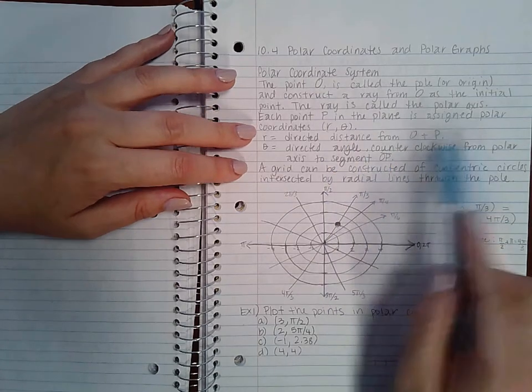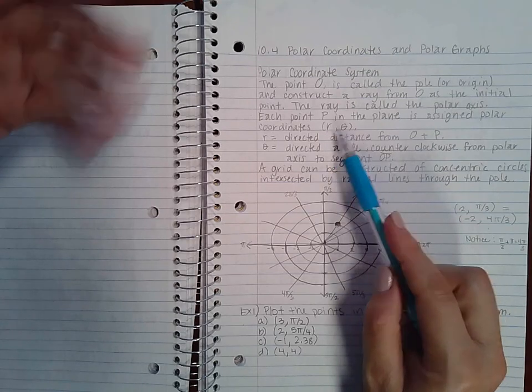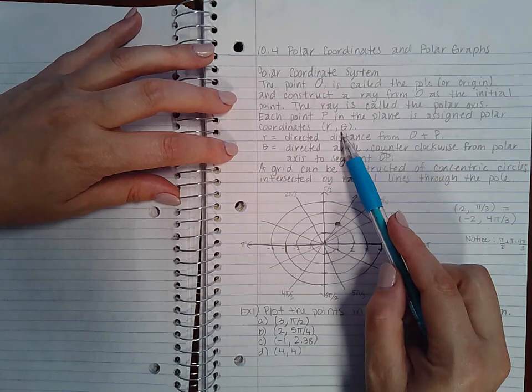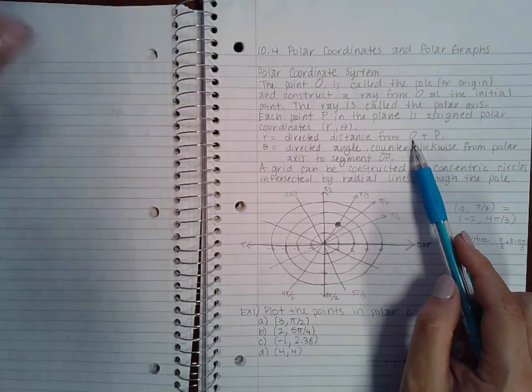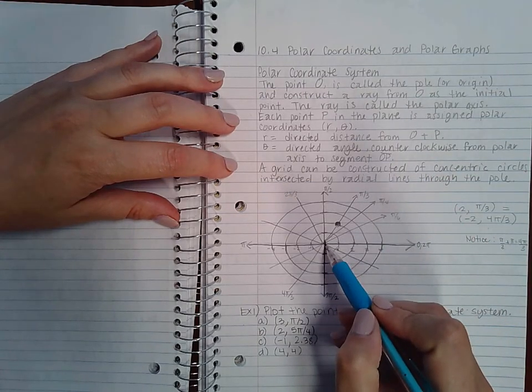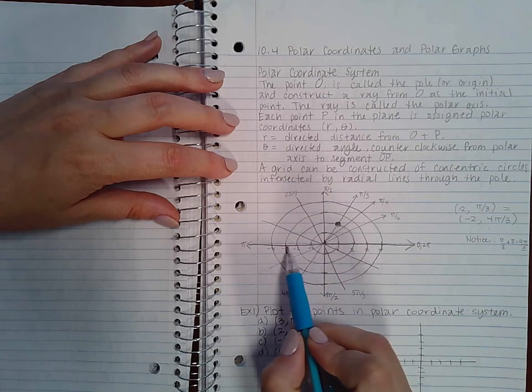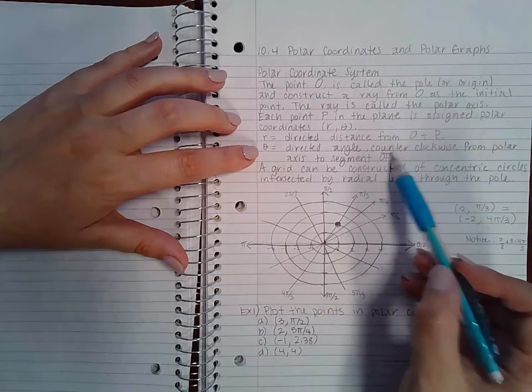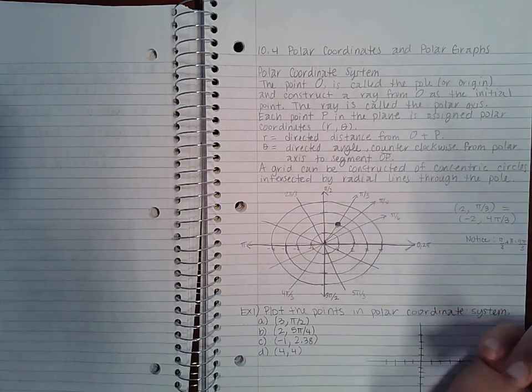Now each point in the plane is assigned polar coordinates. Much like in rectangular coordinates you have x and y, well here we have r and theta. R being the radius, theta being an angle. R is the directed distance from the pole, the origin, and the point. So if your radius is positive, you move out to the right in the positive direction, and if your radius is negative, you move backward toward the negative direction. And then your theta, if it's positive, you move counterclockwise, but if it's negative, you move clockwise.